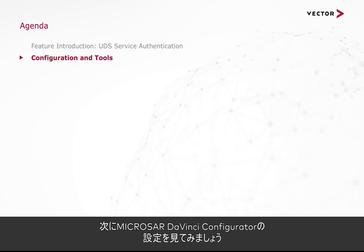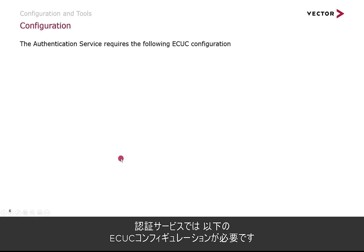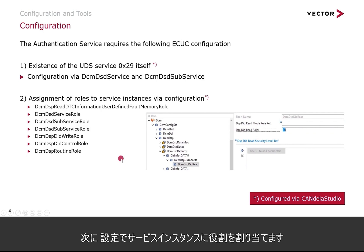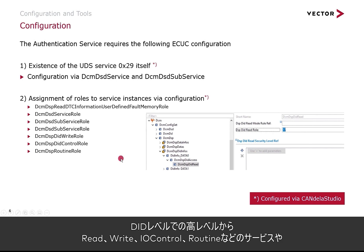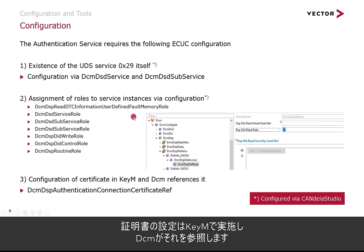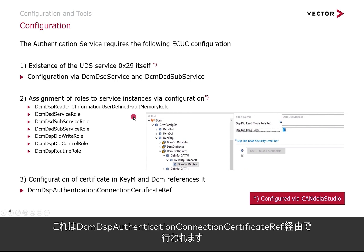Let's have a look at the configuration in Microsoft DaVinci Configurator. The authentication service requires the following ECUC configuration. First, the existence of UDS service 29 authentication itself — configuration happens via DCM-DST service and DCM-DST subservice. Next, we need to assign roles to service instances via configuration: from a high level on D-ID level — read, write D-IDs, I/O control, routines, services or service IDs in general, services with sub-functions, and also for user-defined fault memory elements. The third aspect is the configuration of a certificate in QM and DCM reference edit, done via DCM-DSP authentication connection certificate ref.